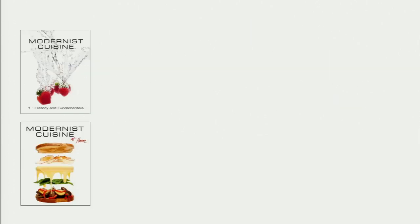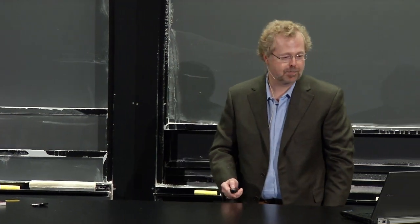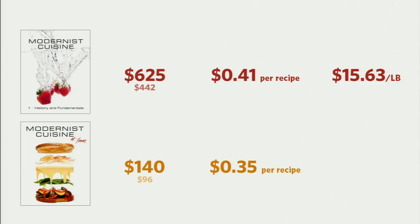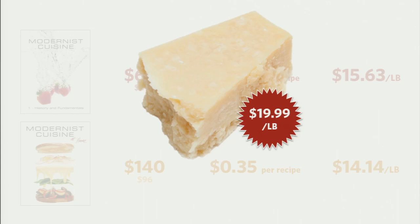Here's a comparison, because I'm analytical. First book was $625, recently $442 on Amazon. Second book is $140, as low as $91 on Amazon. That's 35 cents per recipe. The first book is $15.63 per pound—but Parmesan cheese is $19 a pound, so if you like Parmesan, you should like this book.